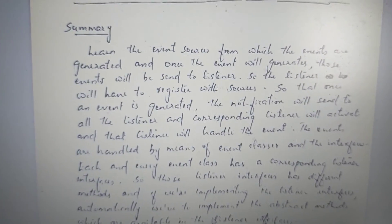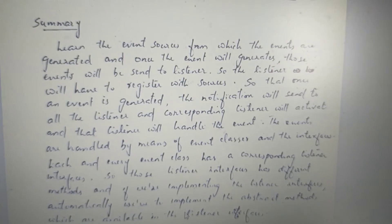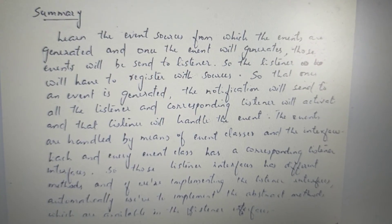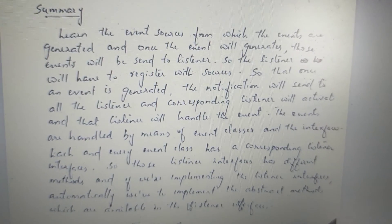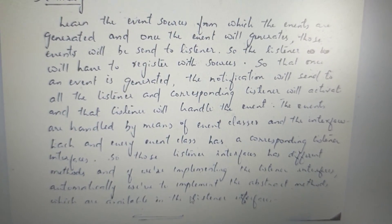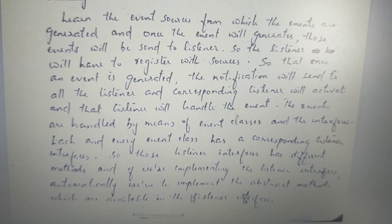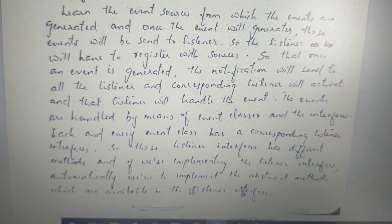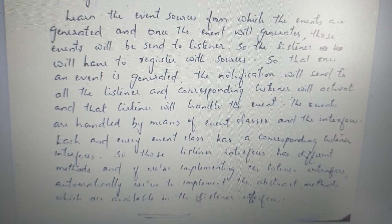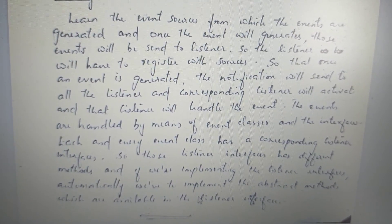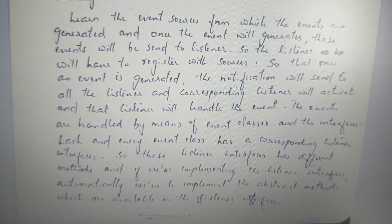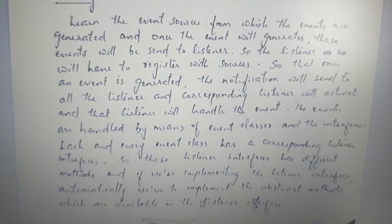When we get an event, we send it to the listener to handle. Because the listener is handling this, if the listener is handling this, you have to register it. If you want to generate an event, all the listeners will be notified. The corresponding listener is activated and registered. One event class will have a corresponding listener interface with abstract methods. This is the event-handling mechanism.